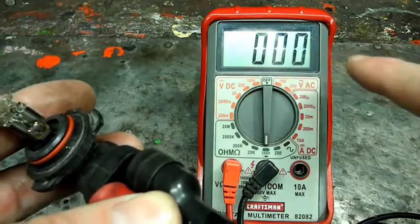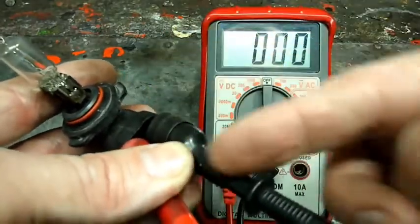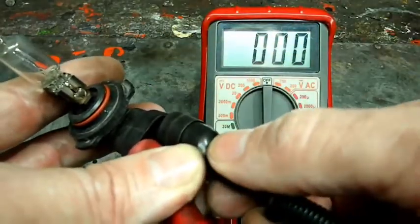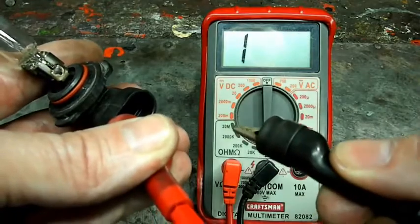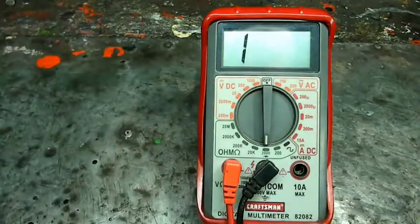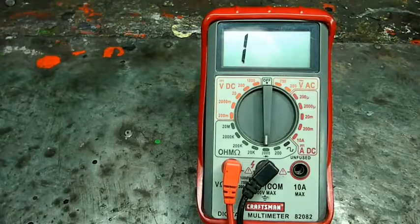You can see the meter went zero, zero, zero. So we have continuity all the way through the bulb. So that's a good one. That's how you do your continuity test.